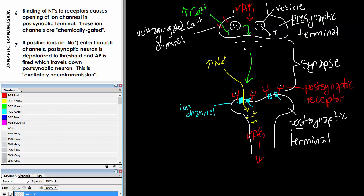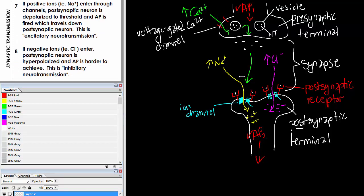In the synapse there is also a high concentration of chloride ions, and different neurotransmitters will bind causing chloride to come in through its specific ion channel, as opposed to sodium. Chloride is negatively charged, so if enough chloride comes in, this will hyperpolarize the neuron — making it harder to reach threshold and therefore harder to fire an action potential. This is inhibitory neurotransmission.